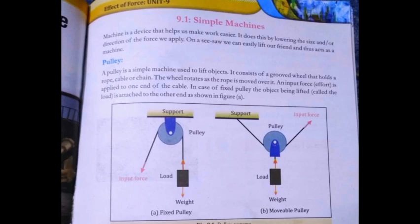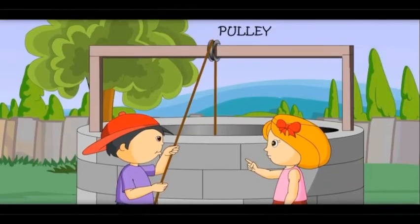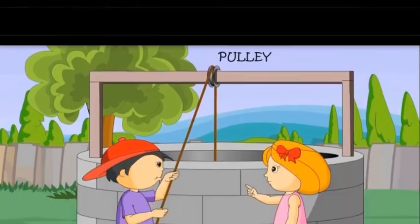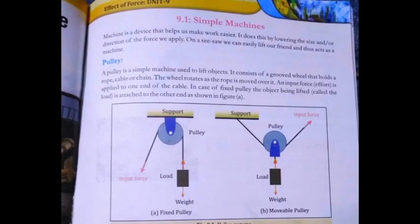The wheel rotates. Like if I will show you the diagram again, so if the child is seeing it, it is pulling it, so what is it? It will pull it, so this wheel will rotate, and on the other side, the water of bucket, it will come up. The wheel rotates as the rope moves.